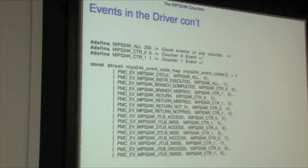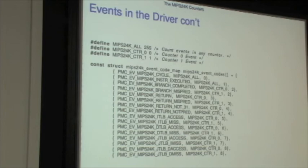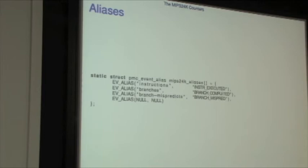You need to be very careful on this architecture which things you try to measure. You also have to provide the aliases when you port the driver — at the moment I've just got three in here: branches, mispredicts, and instructions. I have not put in the cache stuff yet, although I will. So let me talk a little bit about the internals of the code and what you need to do to make this work.